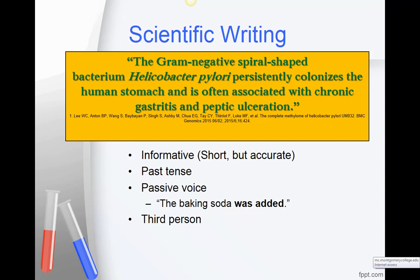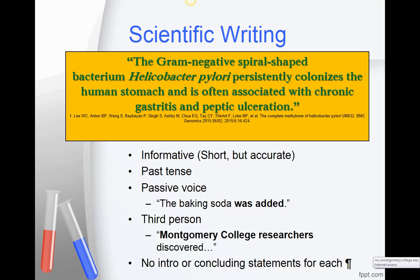If you do have to mention somebody by name — for example, if you are citing — you should use the third person. There should be no use of "I" or "you" in your scientific writing. If you're giving credit to a third person, you would say something like "Montgomery College researchers discovered." Unlike in writing for an English class, you do not need introductory or concluding statements for each paragraph in your scientific writing.